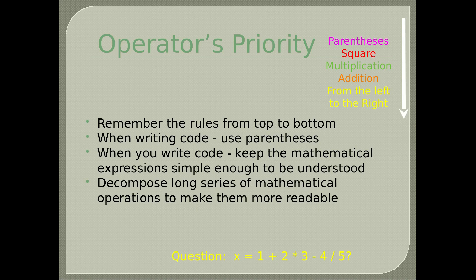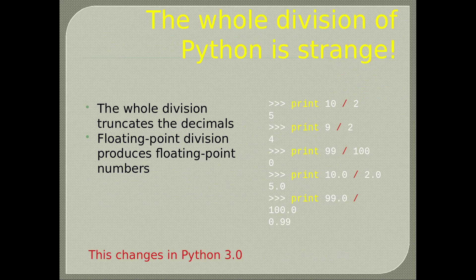Integer division in Python 2 is unusual — it truncates decimals. For example: print(10/2) gives 5, print(9/2) gives 4, print(99/100) gives 0. In Python 3, the result will be accurate. Type print(10.0/2.0) — result is 5.0. Type print(99.0/100.0) — result is 0.99.